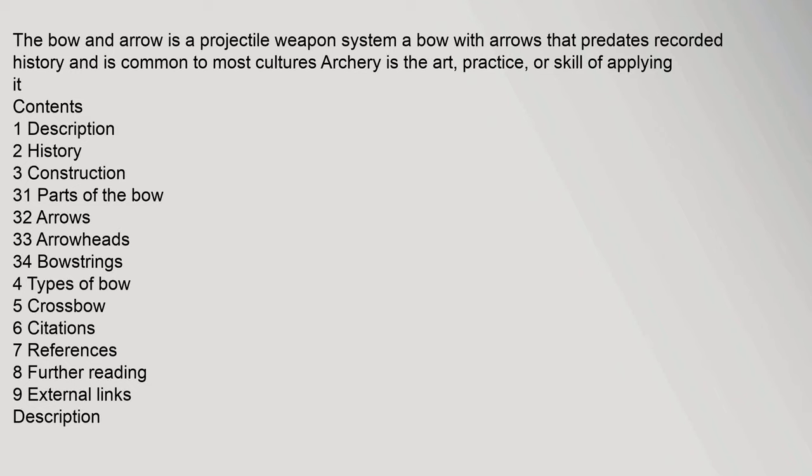The bow and arrow is a projectile weapon system — a bow with arrows — that predates recorded history and is common to most cultures. Archery is the art, practice, or skill of applying it.